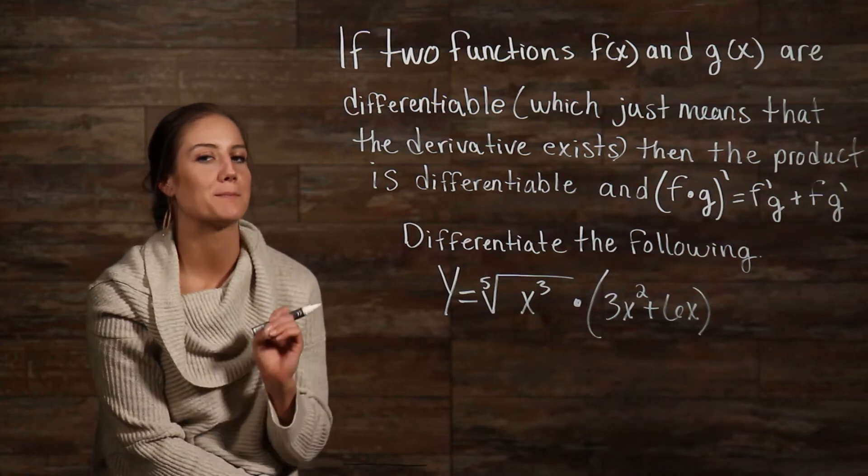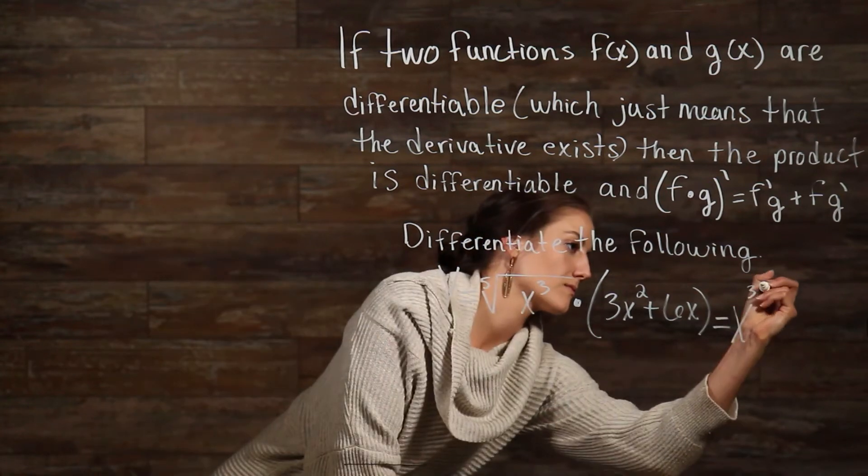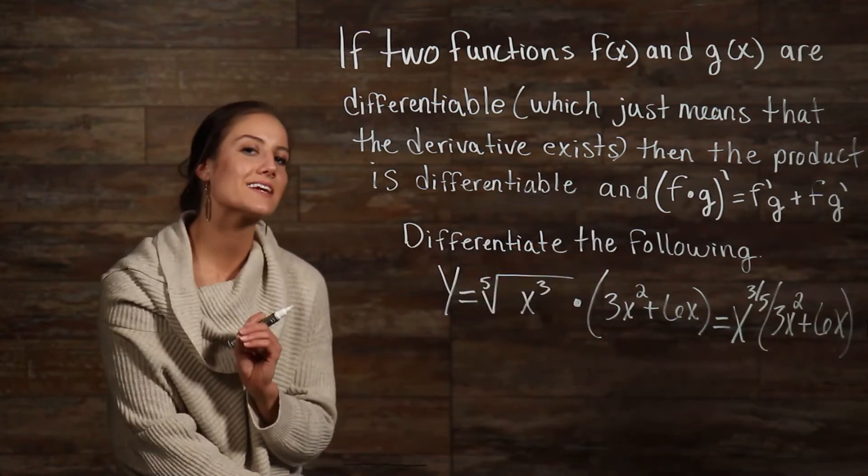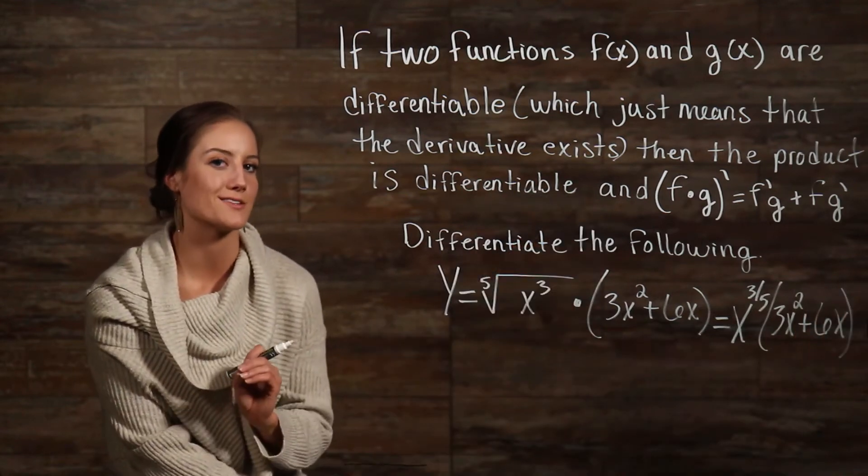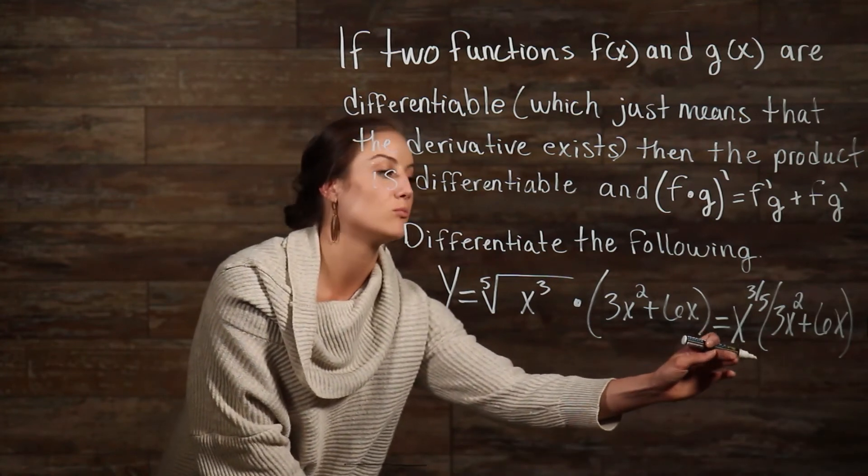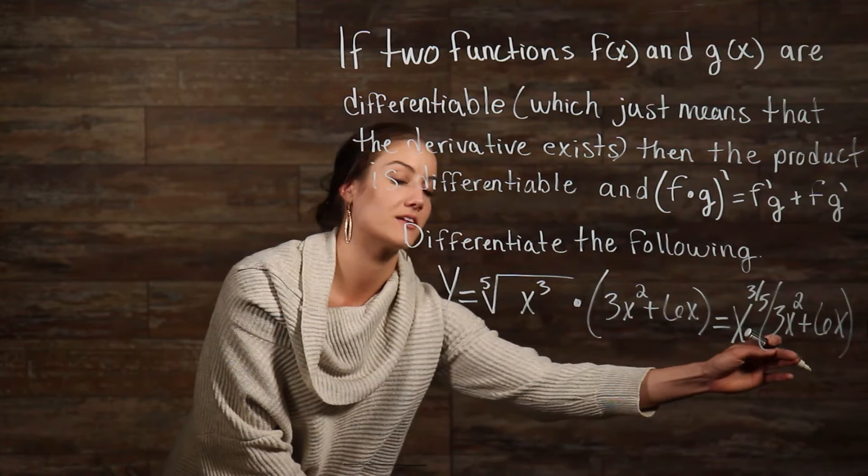I'm going to go ahead and rewrite this to make it a bit simpler. Now, let's take a look at what our product rule is telling us to do. So, what we're going to do is we're going to take the derivative of the first part of our function, and then multiply it times the second part left alone.